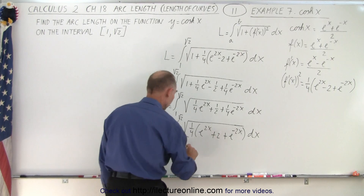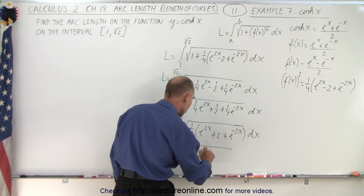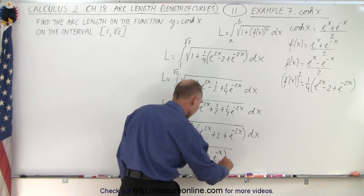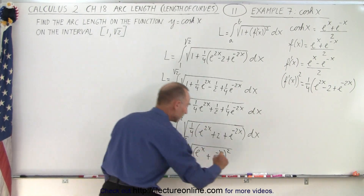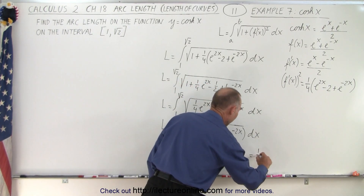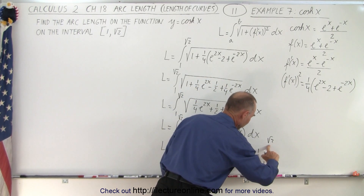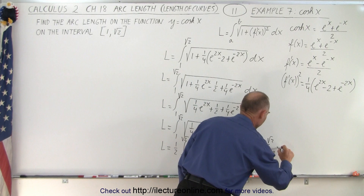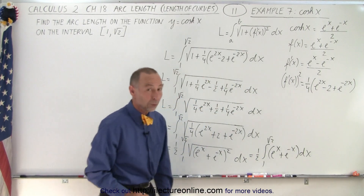So we can also take out the 1 quarter. We have L equal to 1 half times the integral from 1 to the square root of 2. Writing this as a binomial squared, this becomes e to the x plus e to the minus x, quantity squared. The square root undoes the square, so we end up with 1 half times the integral from 1 to the square root of 2 of e to the x plus e to the minus x, times dx. That is a whole lot easier to integrate.